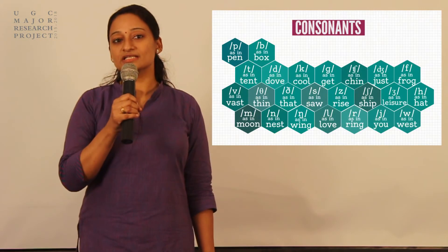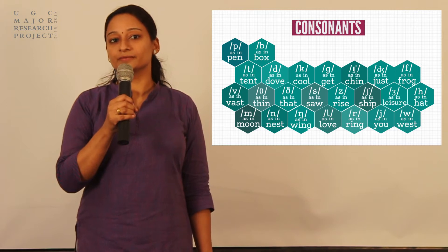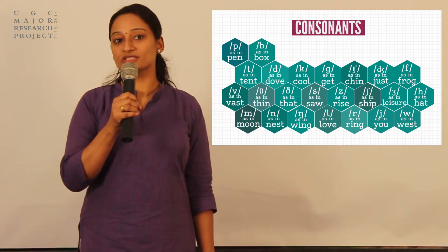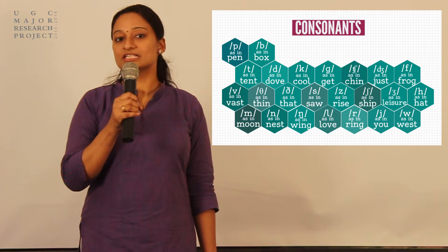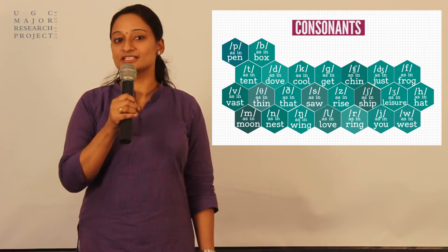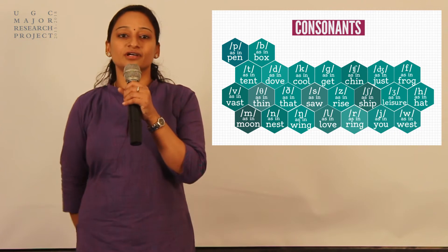The consonants in English are: P as in pen, B as in box, T as in tent, D as in dove.